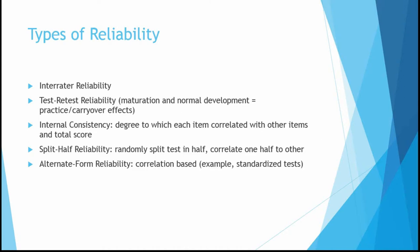Another type of reliability is alternative form reliability, which is also correlation based. We look at whether, if a person takes one version of a test and then a second version, they perform in similar ways on both. This can be as simple as changing the order of items, or as elaborate as having parallel forms. We see this with standardized tests like the SAT — students taking the SAT on different dates may get different versions of the test, but both versions should give a similar score of their ability to do well in college.